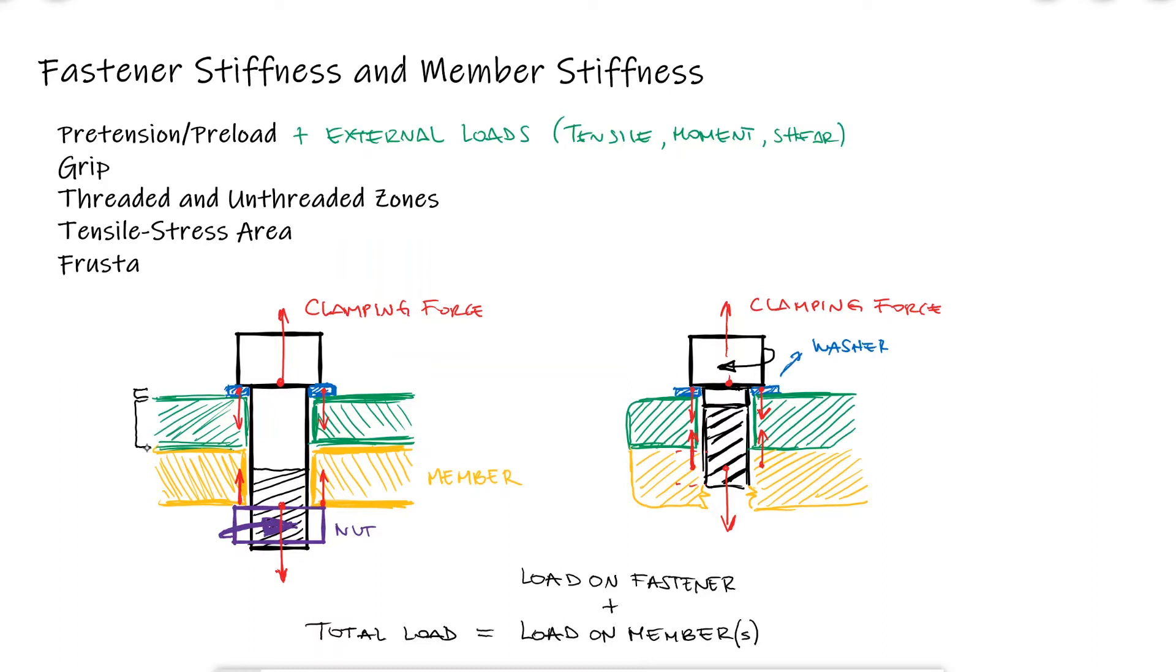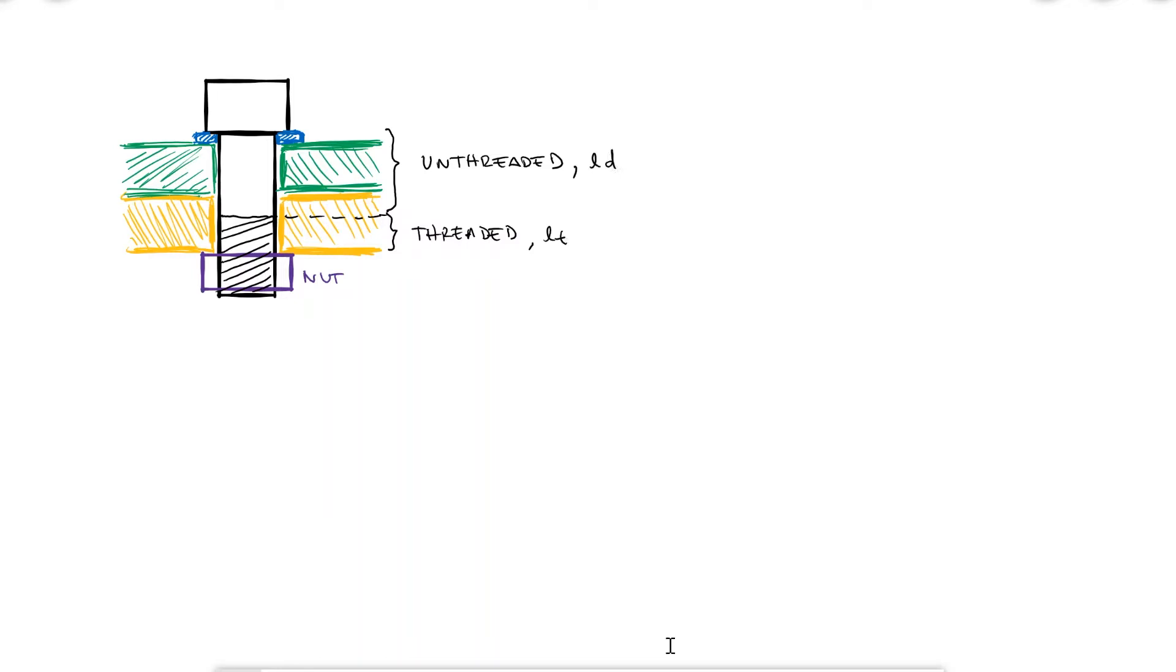We define the grip L as the total thickness of everything that's clamped. In the case of the bolt and the nut, this includes the washers, and for some screws like this cap screw, if you're using washers, the thickness of the washer is also included. The stiffness of the portion of a bolt or screw inside the grip will have two zones: the unthreaded shank portion and the threaded portion.